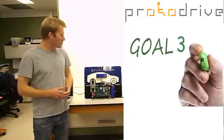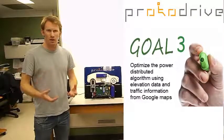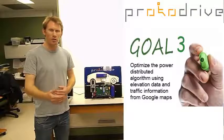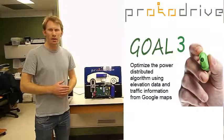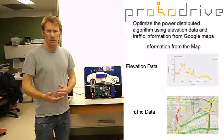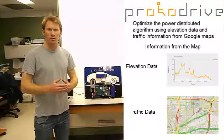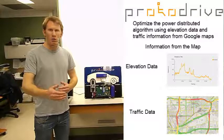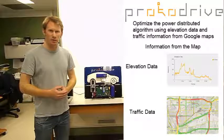The last part is we want to see if we can make this algorithm more optimal by having knowledge of the path ahead. So we plan to bring in information from Google Maps such as the elevation data and the traffic and use this knowledge of the path ahead of the car to optimize our energy scheduling between the two devices.